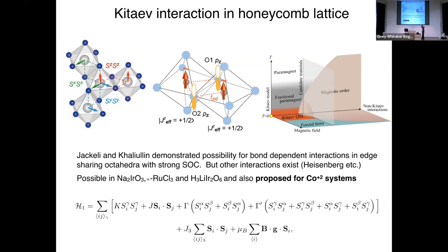In all the existing iridate and ruthenate materials, the non-Kitaev terms — J, gamma, gamma-prime, and J3 — can be large and considerable. Not only do they impede theoretical understanding, they also mean that to induce a quantum spin liquid state you need very large magnetic fields. The in-plane field to suppress magnetic order in alpha-RuCl3 is about 8 Tesla, and for the preferred out-of-plane Z direction the estimates — based on the size of the gamma and gamma-prime terms — are probably around 50 to 80 Tesla.